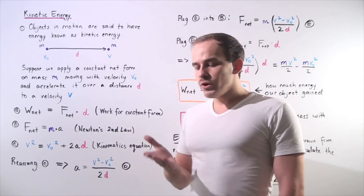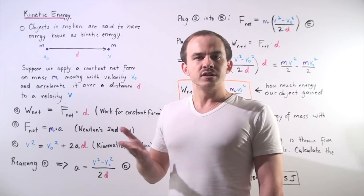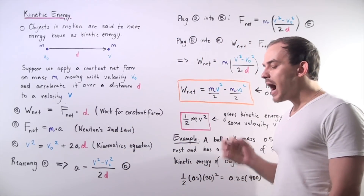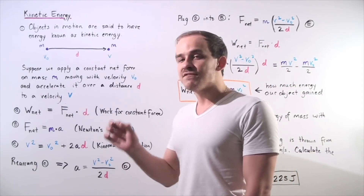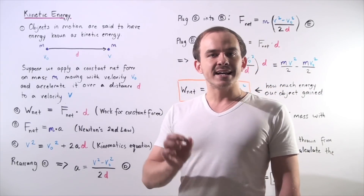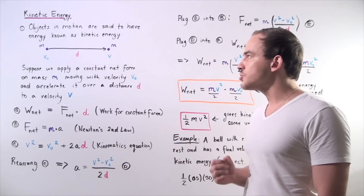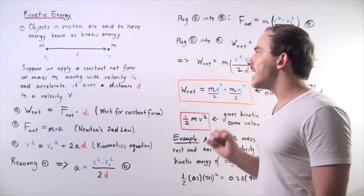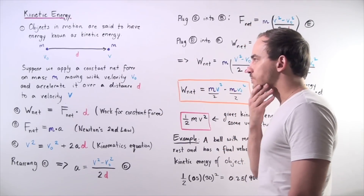Let's suppose that we have an object that is moving with a certain velocity, let's say v-naught. Because this object has a velocity, this object is said to have energy. And this energy is known as kinetic energy. Kinetic energy is the energy of motion. Objects in motion are said to have energy known as kinetic energy.